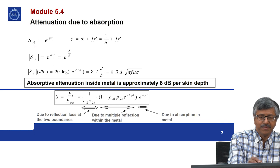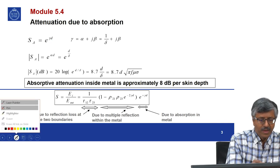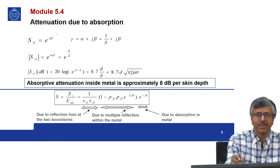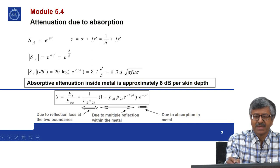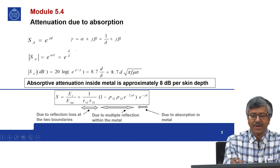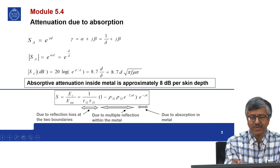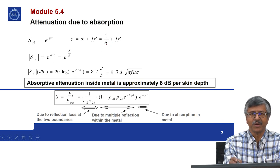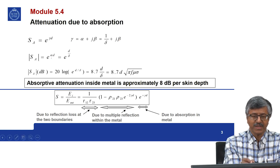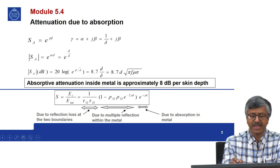Shielding absorption is equal to e to the power of gamma times D, where gamma equals alpha plus j beta. For metals, that is 1 by delta (the skin depth) plus j beta. Taking the real part, which contributes to attenuation, SA equals e to the power of alpha D, equal to e to the power of D by delta. In decibels, 20 log of e to the power of D by delta equals 8.7 D by delta.